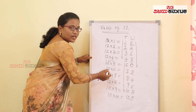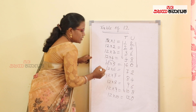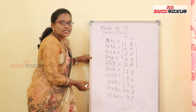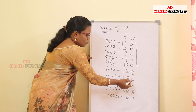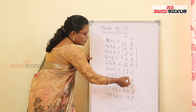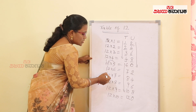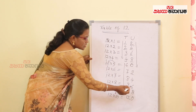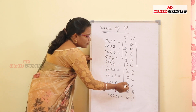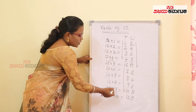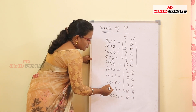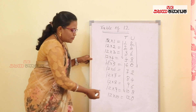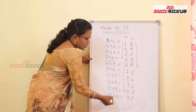For 6×12: 6×2 is 12, write 2 and carry 1; 6×1 is 6, plus carry is 7 — so 72. For 7×12: 7×2 is 14, write 4 and carry 1; 7×1 is 7, plus 1 is 8 — so 84. For 8×12: 8×2 is 16, carry 1; 8×1 is 8, plus 1 is 9 — so 96. For 9×12: 9×2 is 18, carry 1; 9×1 is 9, plus 1 is 10. Finally, 12×10 is 120.